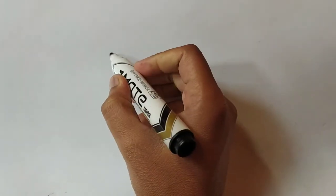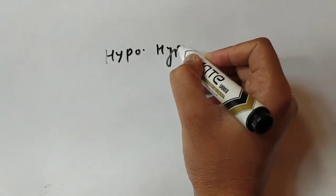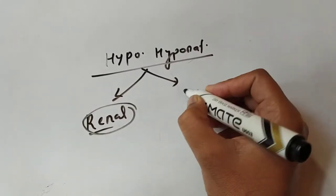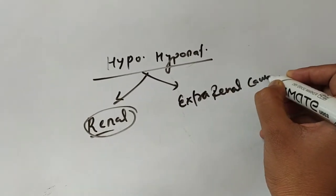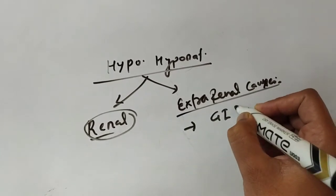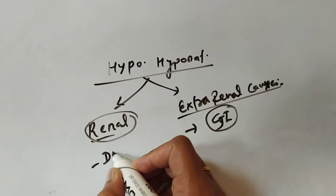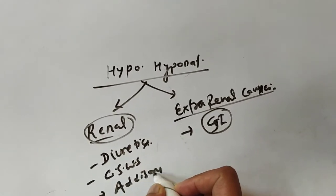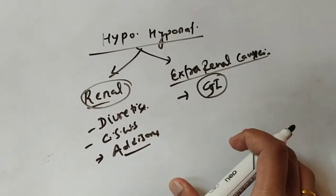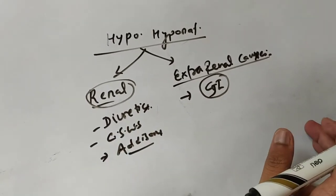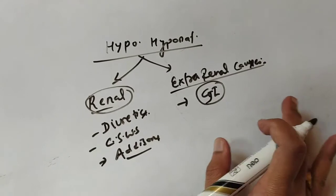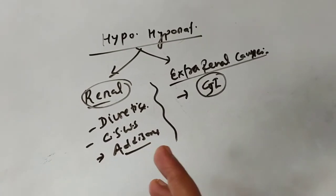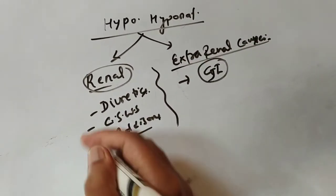Broadly, in hypovolemic hyponatremia there are two categories of causes: renal causes — such as diuretics, cerebral salt wasting syndrome, and Addison's disease — and extra-renal causes, such as GI losses. You can often differentiate by history, but lab tests are needed to confirm.